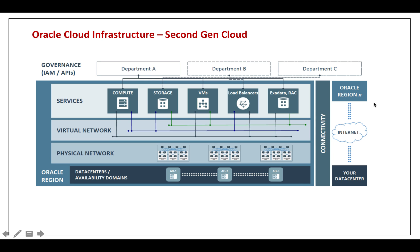To start with, let's look at connectivity. Imagine you are inside your data center and you need to connect your machines or clients to servers or databases residing in the Oracle data center — the Oracle region. You have two options: you could go via the internet, which is the public network, or you could go via a secure and fast network called FastConnect. FastConnect is secure because you are not using the public internet — there is a specific fiber laid from FastConnect companies directly to the Oracle region.